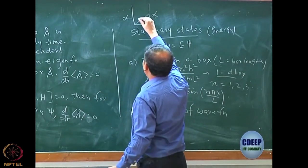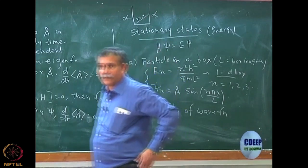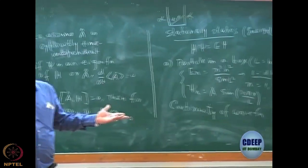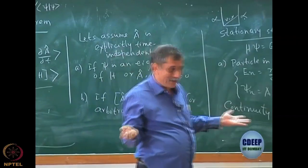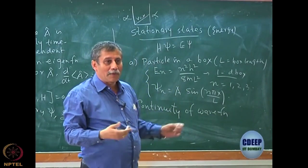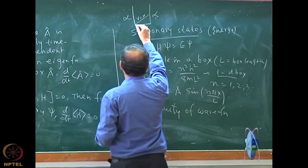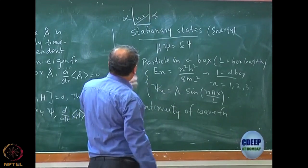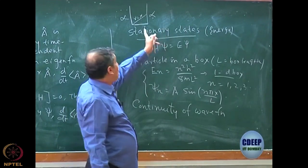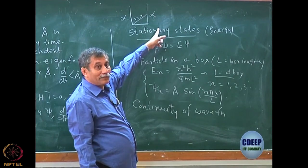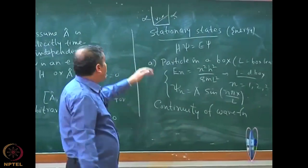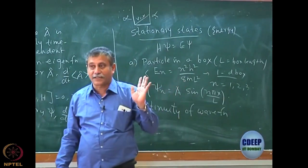For example, let us say V equals x — the potential is increasing inside the box. I hope you will be able to solve such a problem. You have solved V equal to 0 for particle in a box. If I put V equal to x, there must still be continuity: at the boundaries, the wave function must go back to 0. It can also be a quadratic function, like x squared.